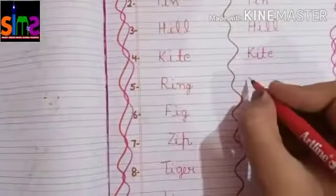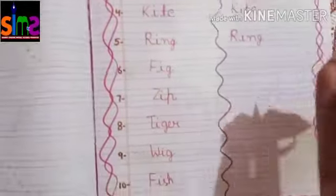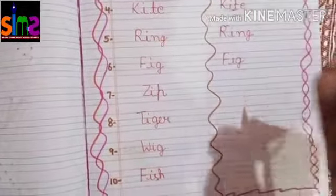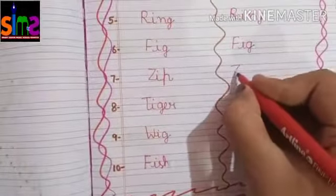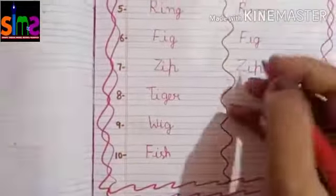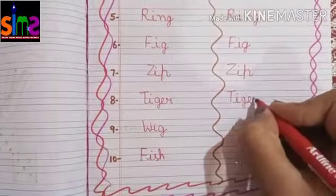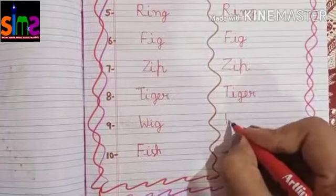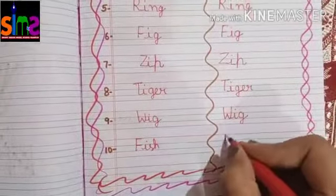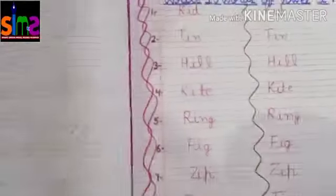On sixth number you all will write F-I-G, Fig. On seventh number you all will write Z-I-P, Zip. On eighth number you all will write T-I-G-E-R, Tiger. On ninth number you all will write W-I-G, Wig. On tenth number you all will write F-I-S-H, Fish.